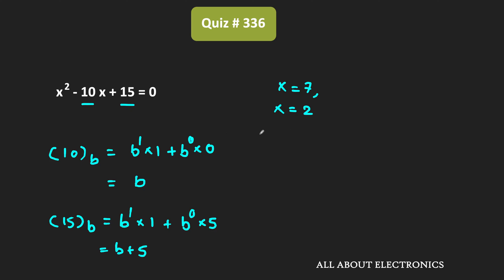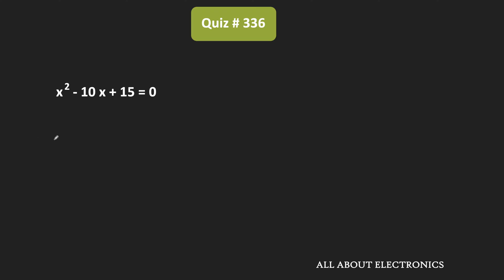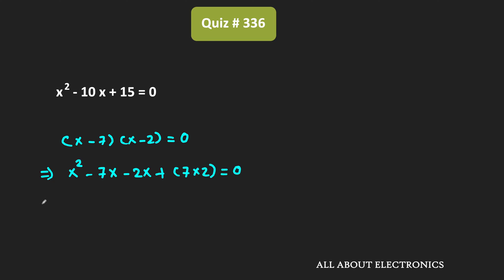We have already been given the two roots of this quadratic equation. So using these two roots, we can generate the quadratic equation with decimal numbers. From the roots, we can write the quadratic equation as x minus 7 times x minus 2 is equal to 0, which expands to x squared minus 9x plus 14 is equal to 0. So the decimal equivalents of the two numbers should be equal to 9 and 14.